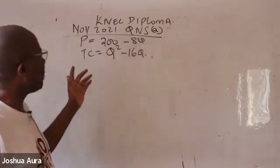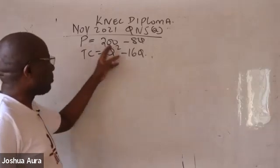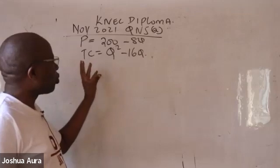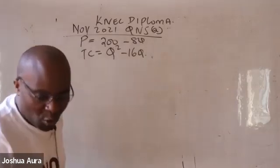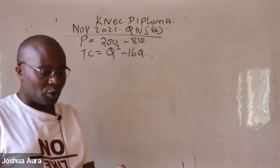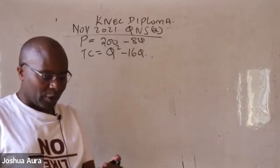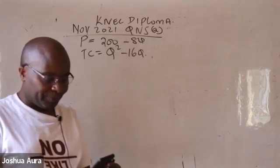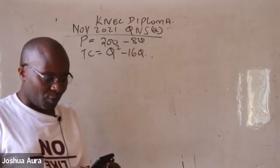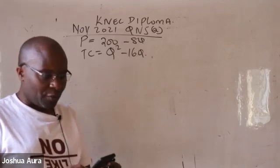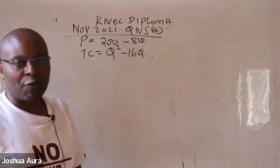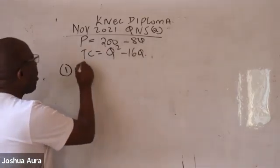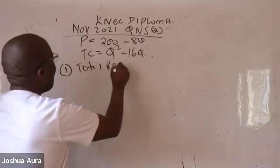In question number 5A, they gave us the price of the commodity as a function, then we have the total cost. What they wanted us to do — number one — is to give them the total revenue function. So number one, they want us to give them the total revenue function.